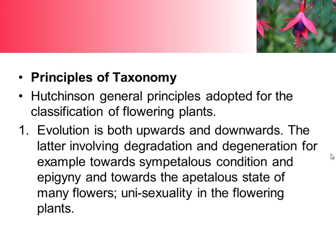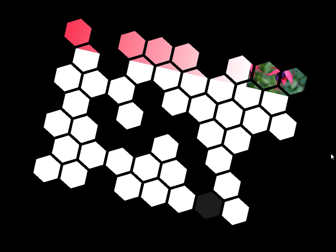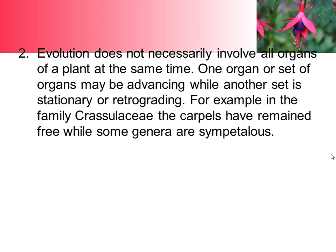Principle number one: evolution is both upwards and downwards, the latter involving degradation and degeneration. For example, towards the sympetalous condition and epigyny, and towards the apetalous state of many flowers, and unisexuality in the flowering plants.